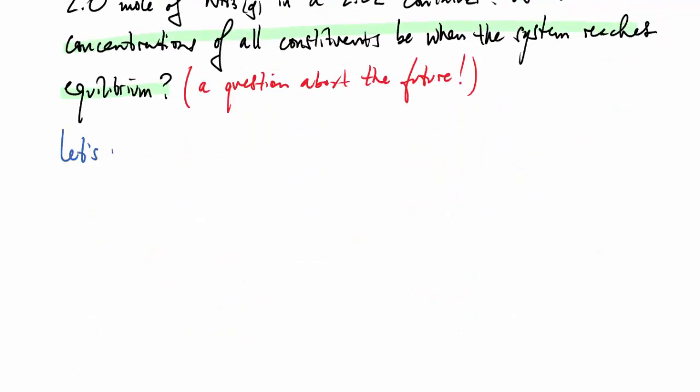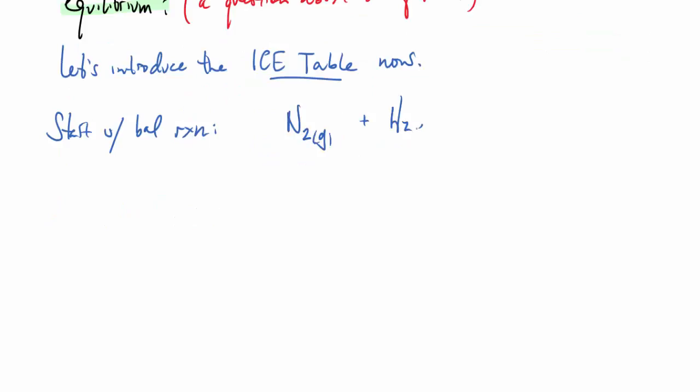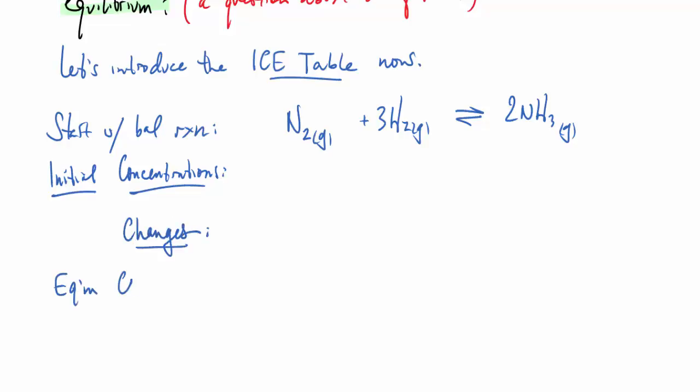So in order to do that, we have to introduce the very valuable and important analytical tool we call the ICE table. And to do that, we'll start with a balanced chemical reaction. You've seen this one a few times already in this video, but there it is, nitrogen, and the three hydrogens making the two ammonia back and forth. We'll have the initial concentrations, the concentration changes as we shift towards equilibrium, and then finally the equilibrium concentrations. So ICE is Initial, Change, and Equilibrium. Remember, the initial concentration plus the changes will be the equilibrium ones. We'll put in the initial concentrations here.